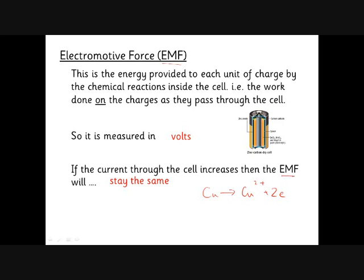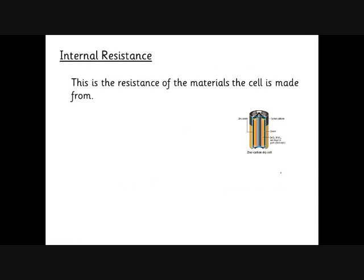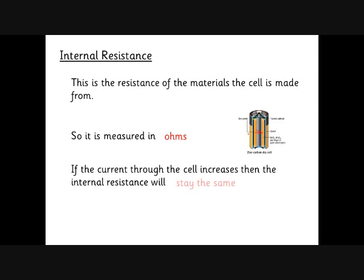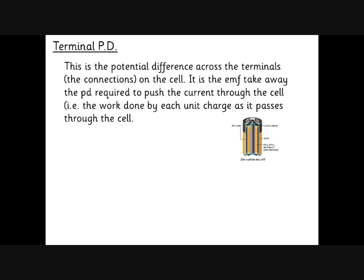Whatever the current through the cell is, the EMF stays the same. Now for internal resistance: forget about the electrodes and think about the part of the circuit where electrons have to get across the cell. There's some energy used to do that, and this is to do with internal resistance. The easier it is for electrons to get across, the less the internal resistance will be. Internal resistance is measured in ohms, and it won't change with current, just as a resistor in a circuit doesn't change as you change the current through it.